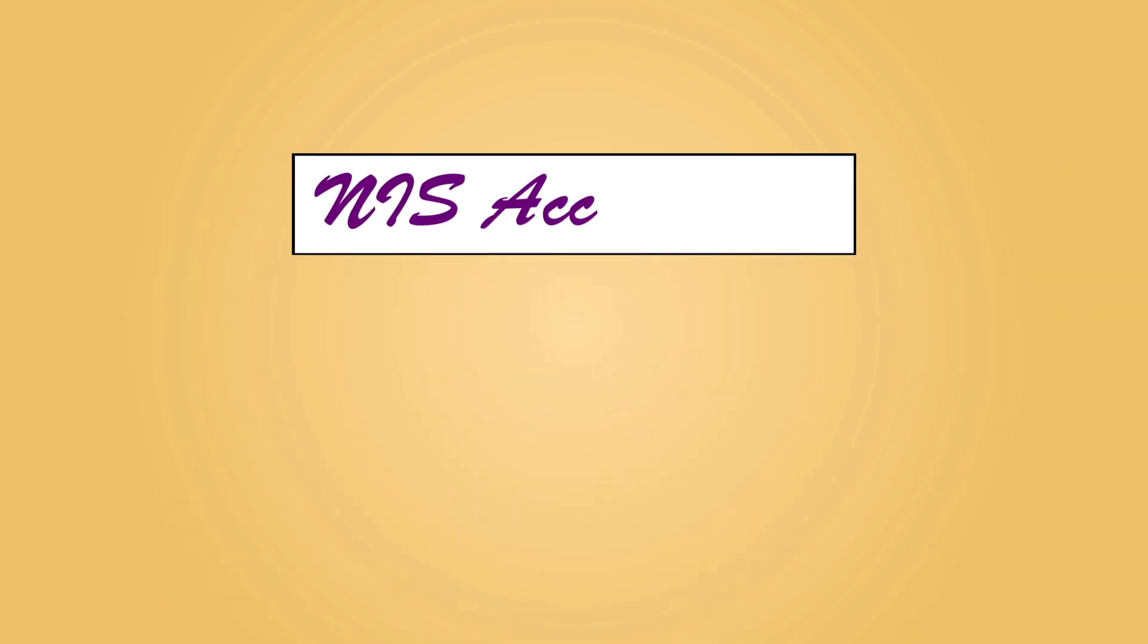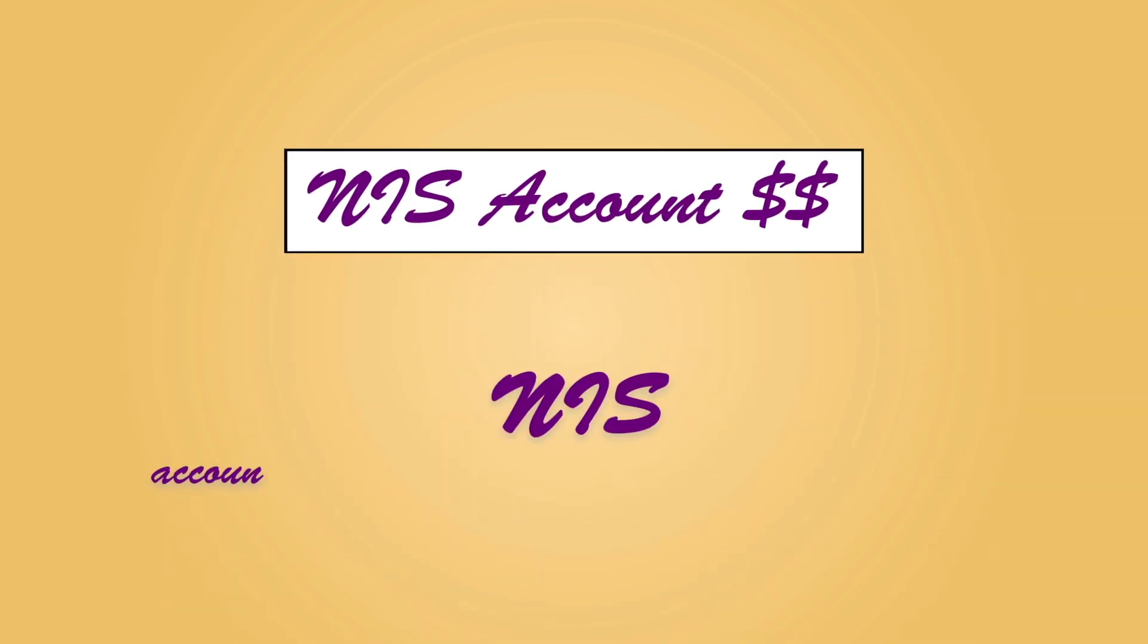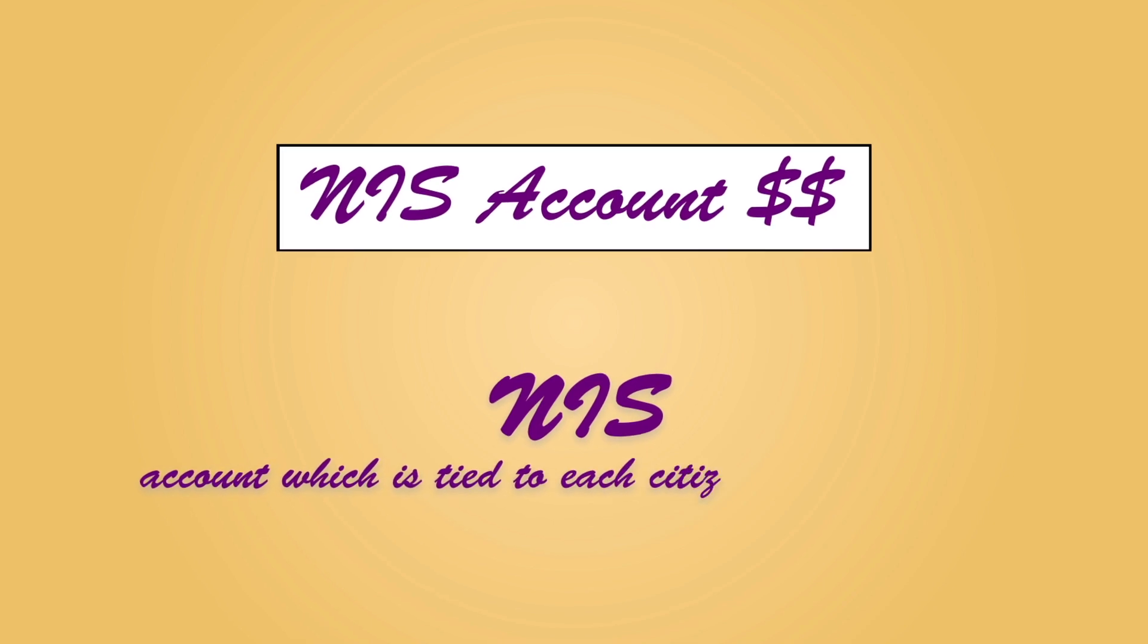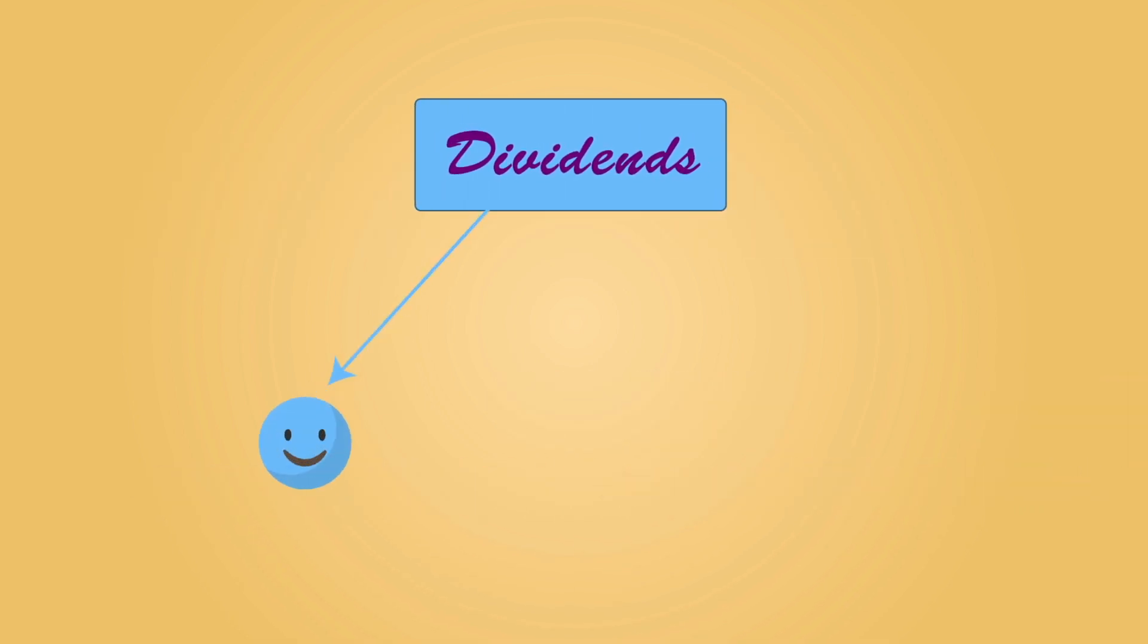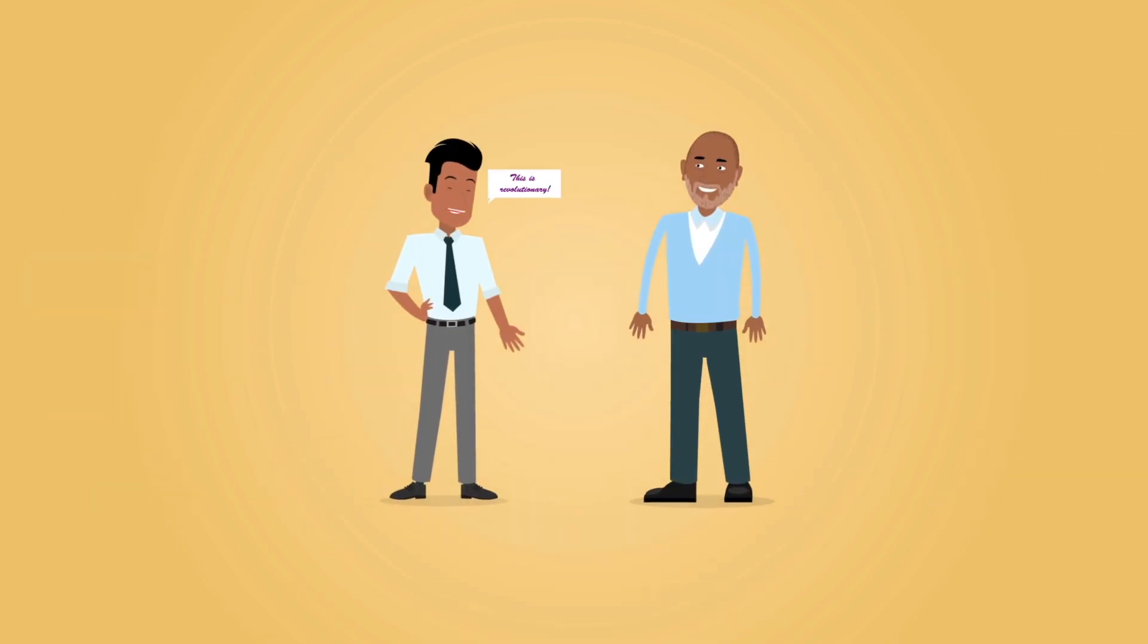The BDM will establish an NIS which is tied to each citizen's NIB number. Part of the interest paid from our global investments will be deposited into this account. Dividends will be equally distributed to each citizen on a monthly basis. This is revolutionary.